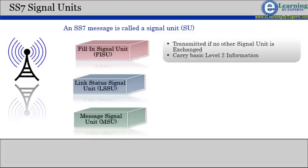FISUs carry basic level 2 information only, for example acknowledgement of signal unit received by a remote signaling point.